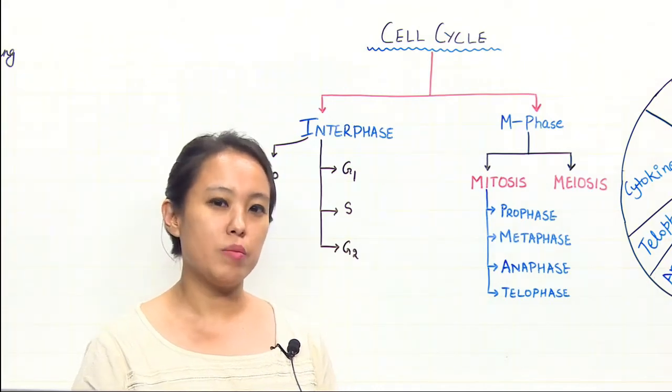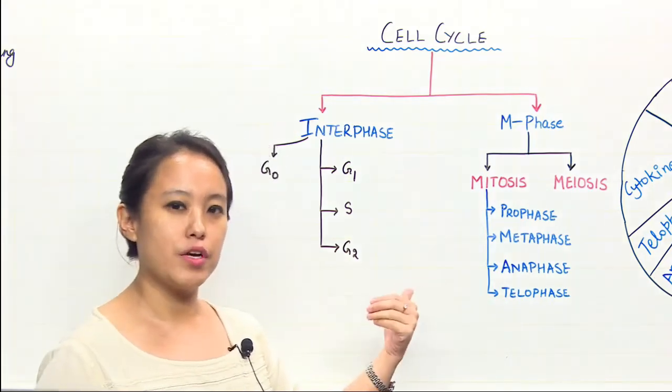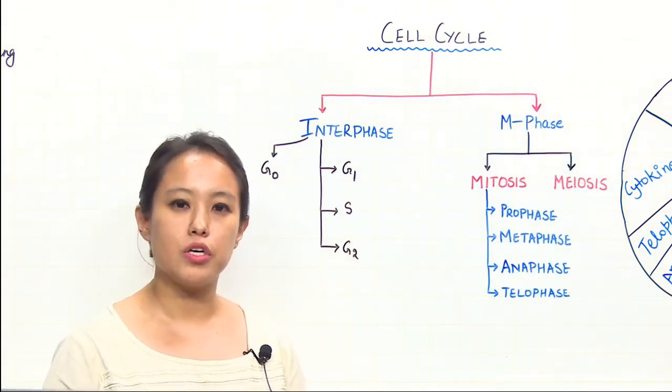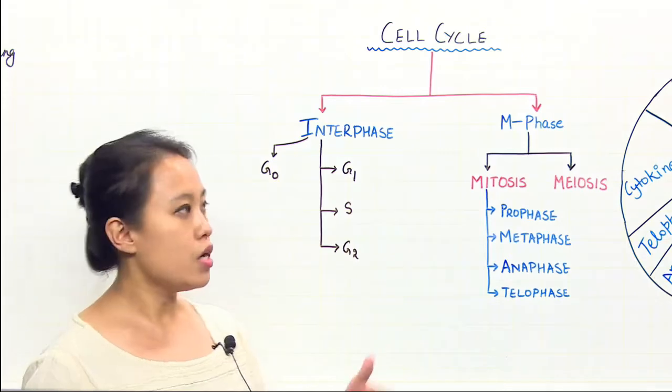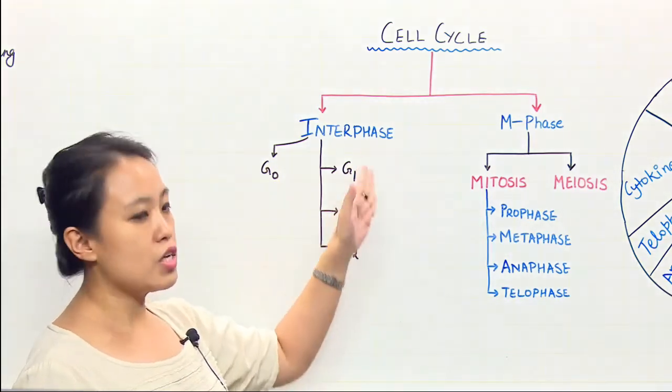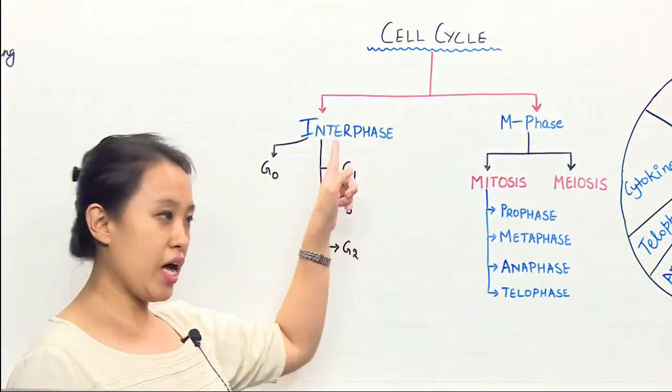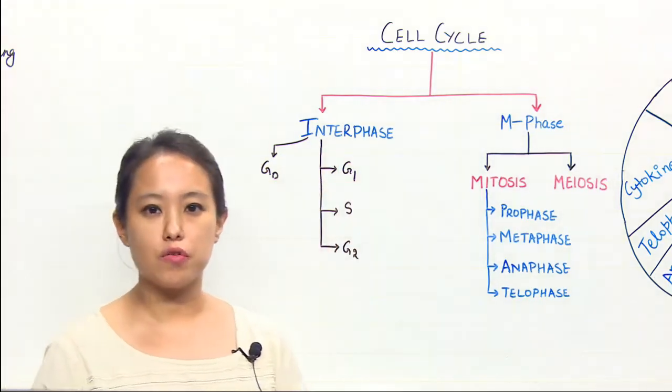What I mean by this is that during interphase, majority of the time the cell is preparing itself to undergo cell division. Interphase is divided into G1 phase, S phase and G2 phase. I have separately drawn a G0 phase.